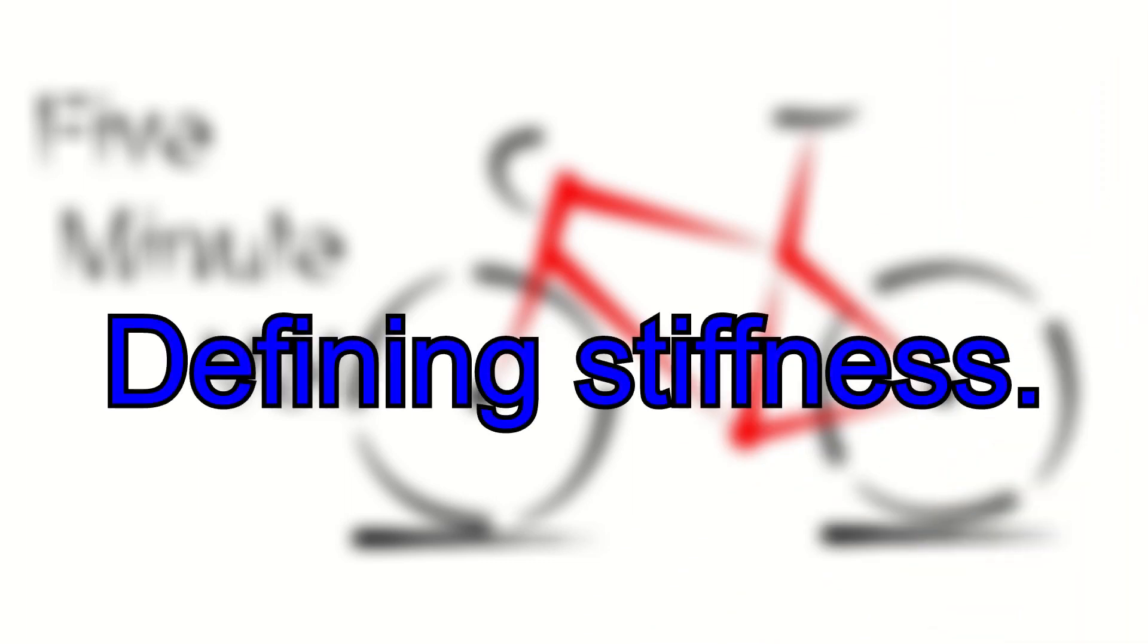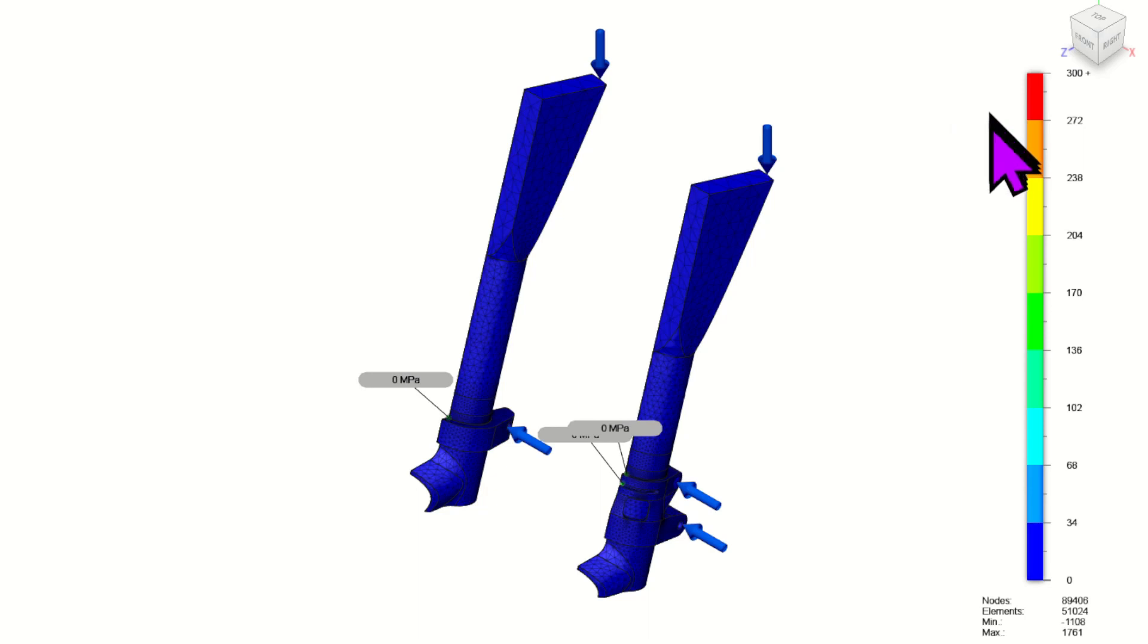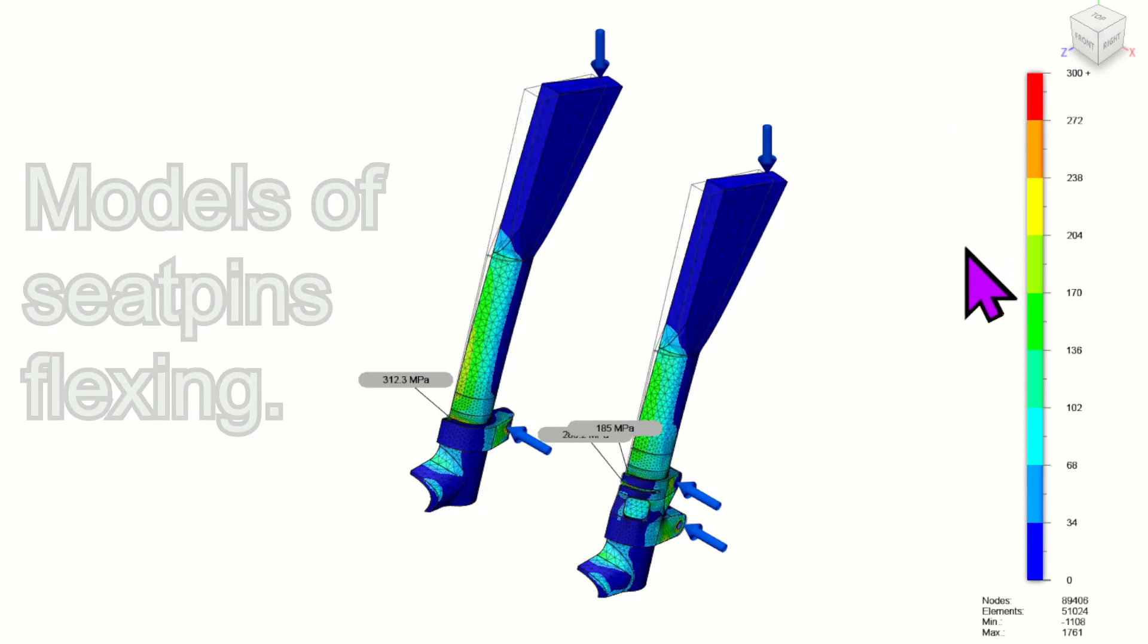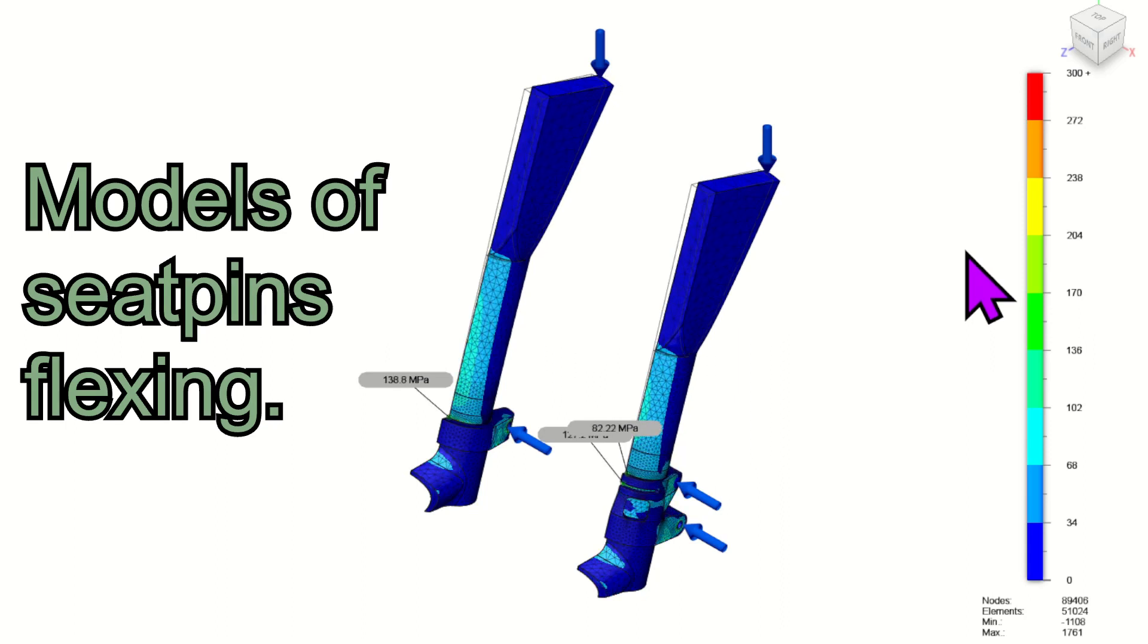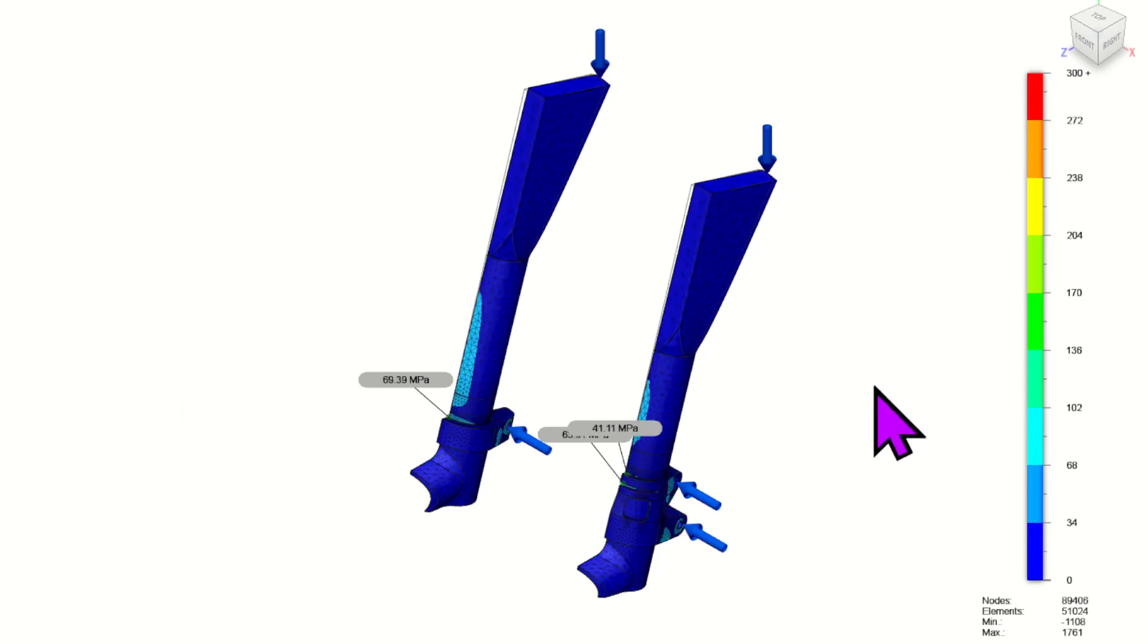Stiffness can be defined as the ability of a component or structure to resist deformation when a load is applied. So a high stiffness component will not deform very much when it's loaded. Similarly, a low stiffness or compliant component will deform a lot.